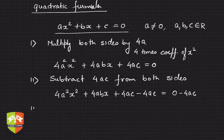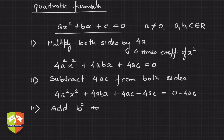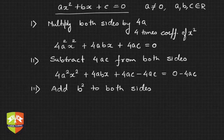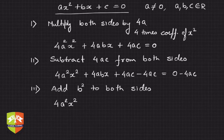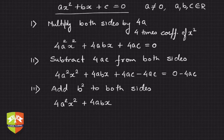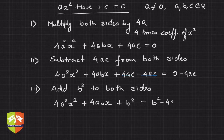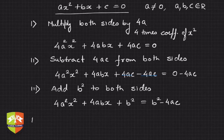Step three: add b² to both sides. Simplifying simultaneously, we have 4a²x² + 4abx, and the 4ac terms cancel each other out, leaving b² minus 4ac on the right-hand side. All these steps will help us in completing the square.